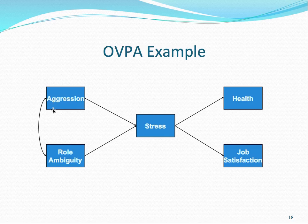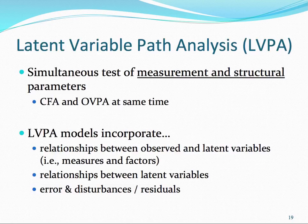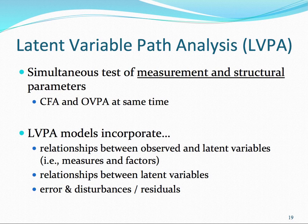The next step would be to run structural equation modeling using observed variables as our constructs. In contrast to observed variable path analysis, we could also do latent variable path analysis, which simultaneously tests a measurement model and structural parameters—things such as the variance of latent variables and beta coefficients.